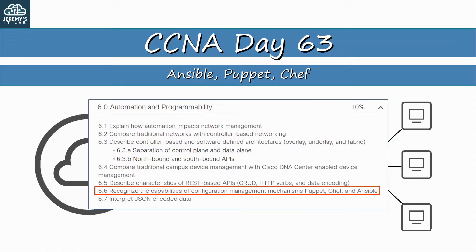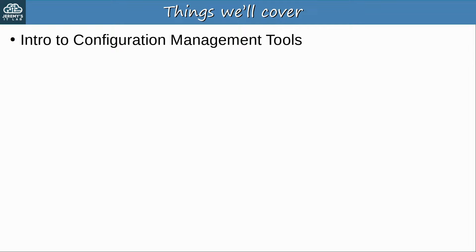They are exam topic 6.6, which says you must be able to recognize the capabilities of configuration management mechanisms. Just like with the other automation topics on the CCNA, you don't have to actually be able to use these tools yet, but Cisco expects you to have a basic understanding of their purpose and capabilities. First I'll introduce Configuration Management Tools, what they are and why we use them, then I'll introduce some of the characteristics of Ansible, Puppet, and Chef.